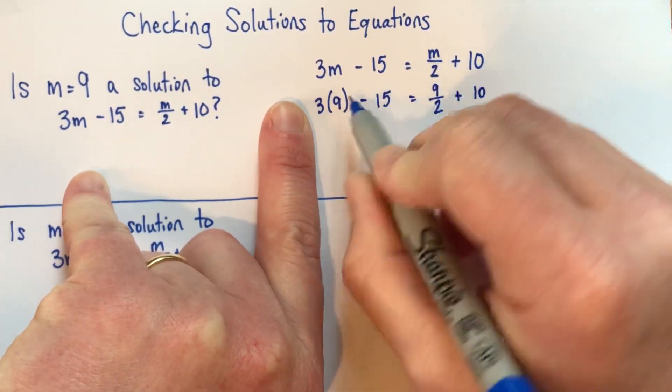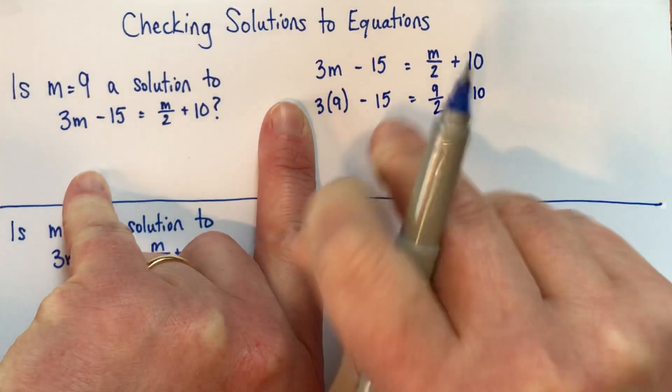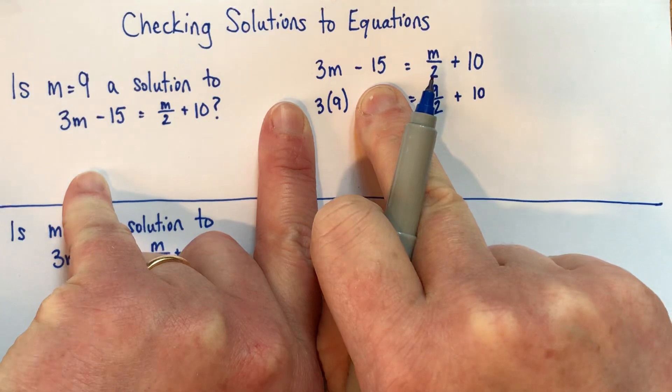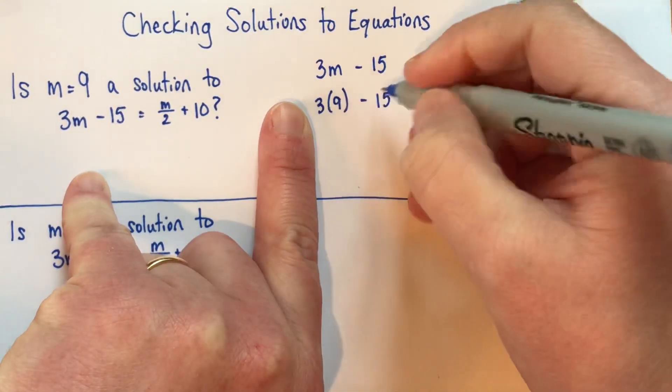And as you're doing this, make sure you keep writing down the whole equation. Don't just write 3 times 9 and then write equals 27. Make sure you write subtract 15.